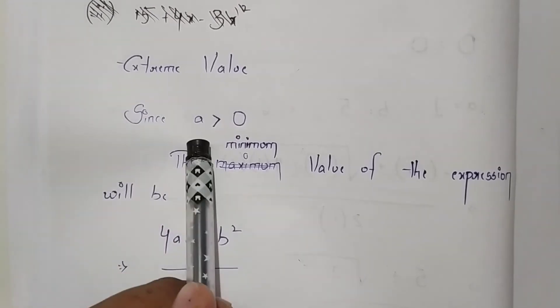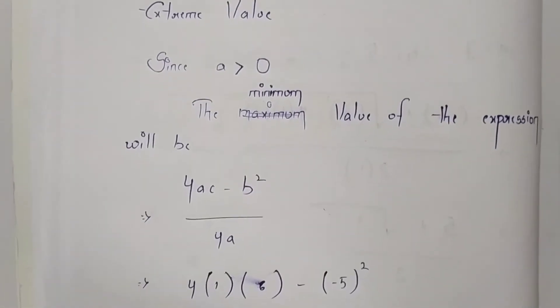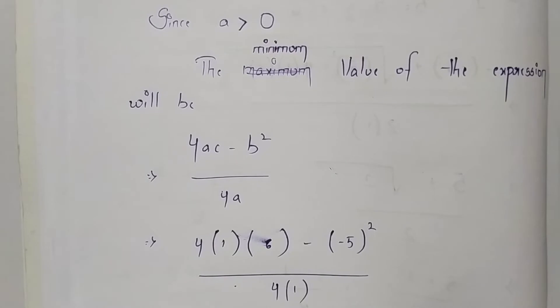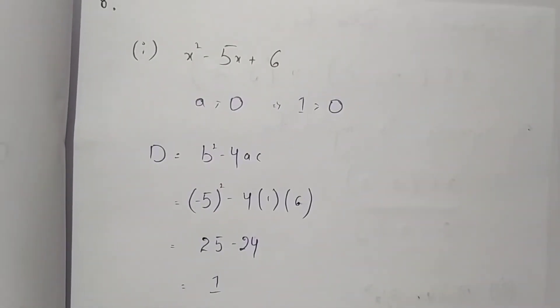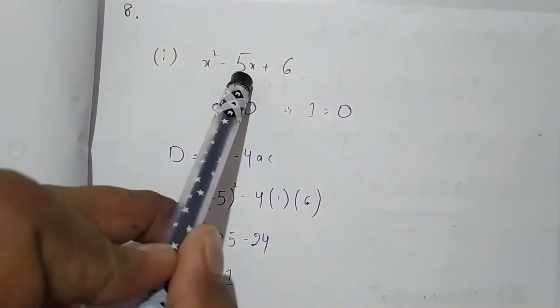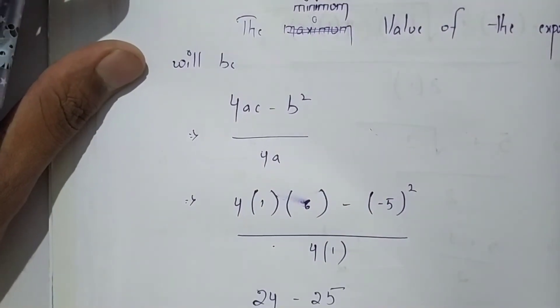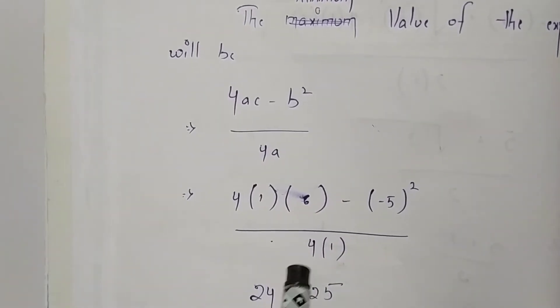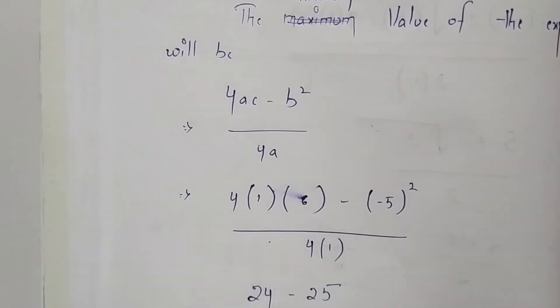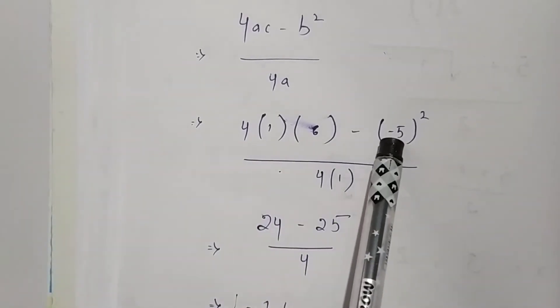Since the value of a is greater than 0, the expression has a minimum value. We find the minimum value using the formula (4ac - b²) / 4a. From the equation, a is 1, b is -5, and c is 6. Substituting: (4 × 1 × 6) - (-5)² divided by 4 × 1, which gives us 24 - 25 divided by 4.